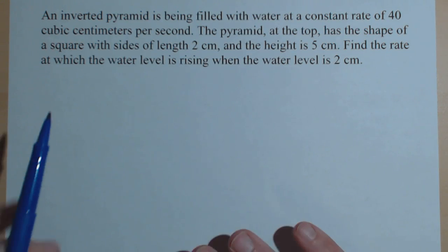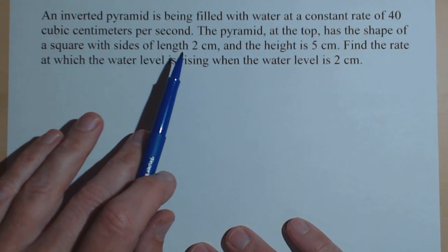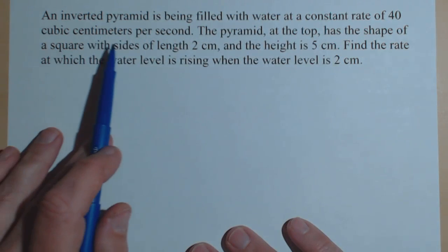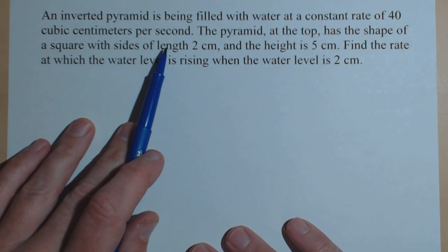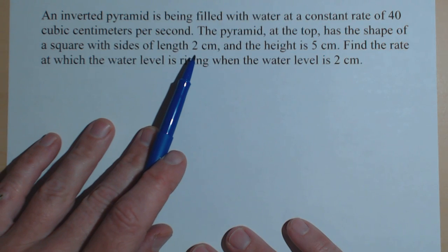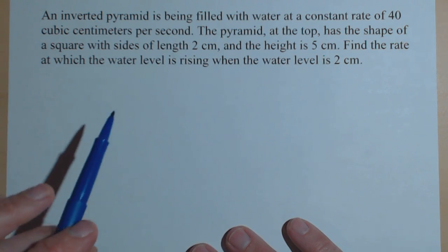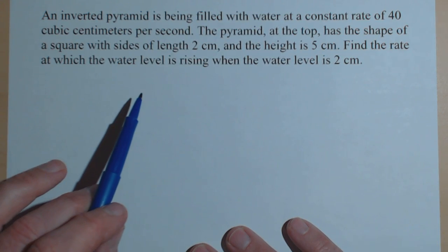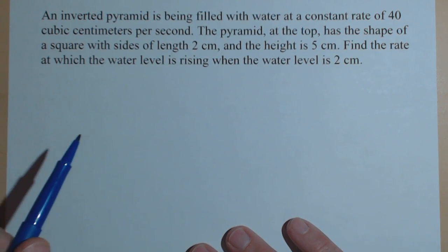In this related rates problem, we have an inverted pyramid that's being filled with water at a constant rate of 40 cubic centimeters per second. At the top, it's a square with length of 2 centimeters, and its height is 5. Find the rate at which the water level is rising when the water level is 2 centimeters.